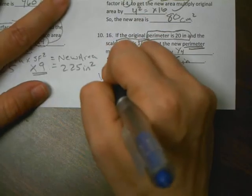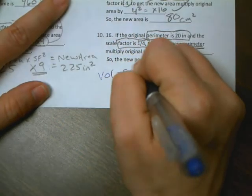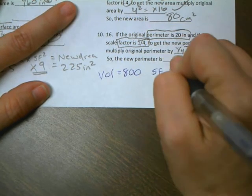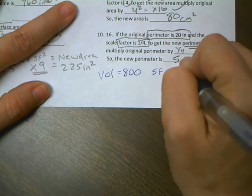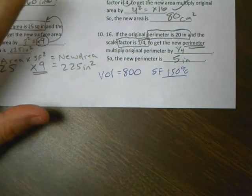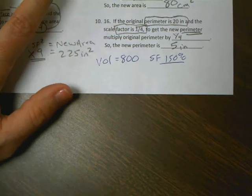If I give you a volume equal to 800, and I tell you I want to multiply it by a scale factor of 150%, we have to think about what's the best way to do this so we can do it mentally without a calculator.